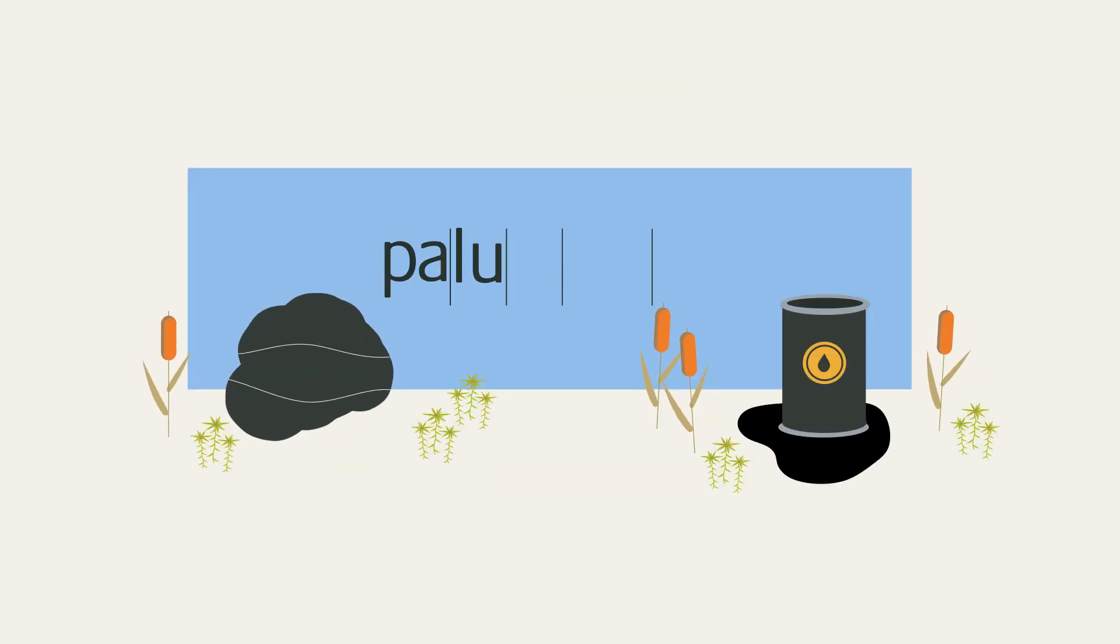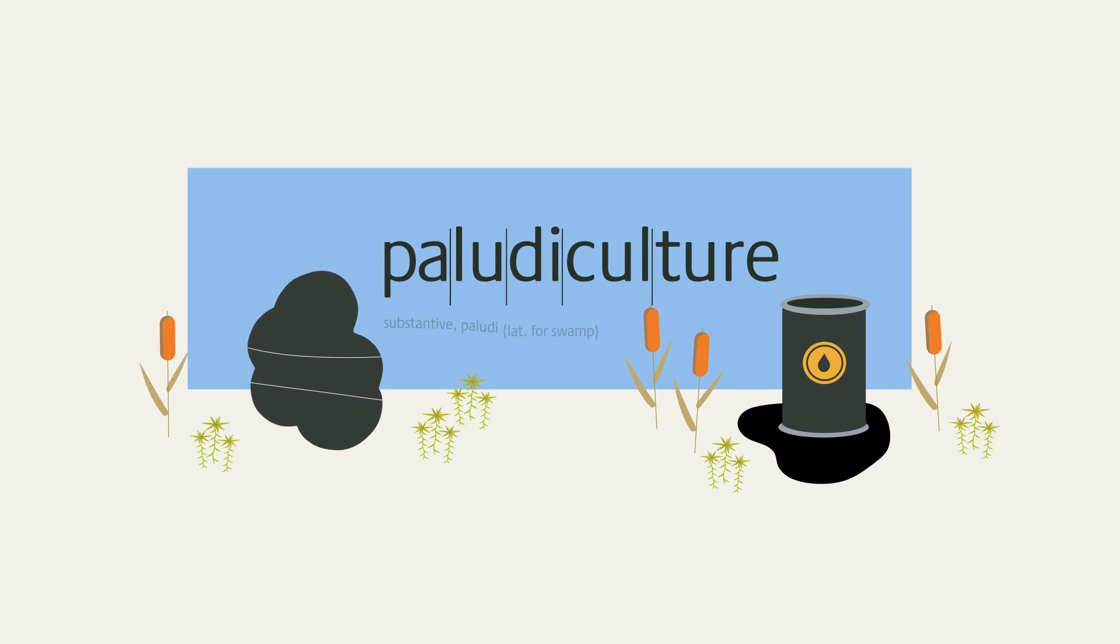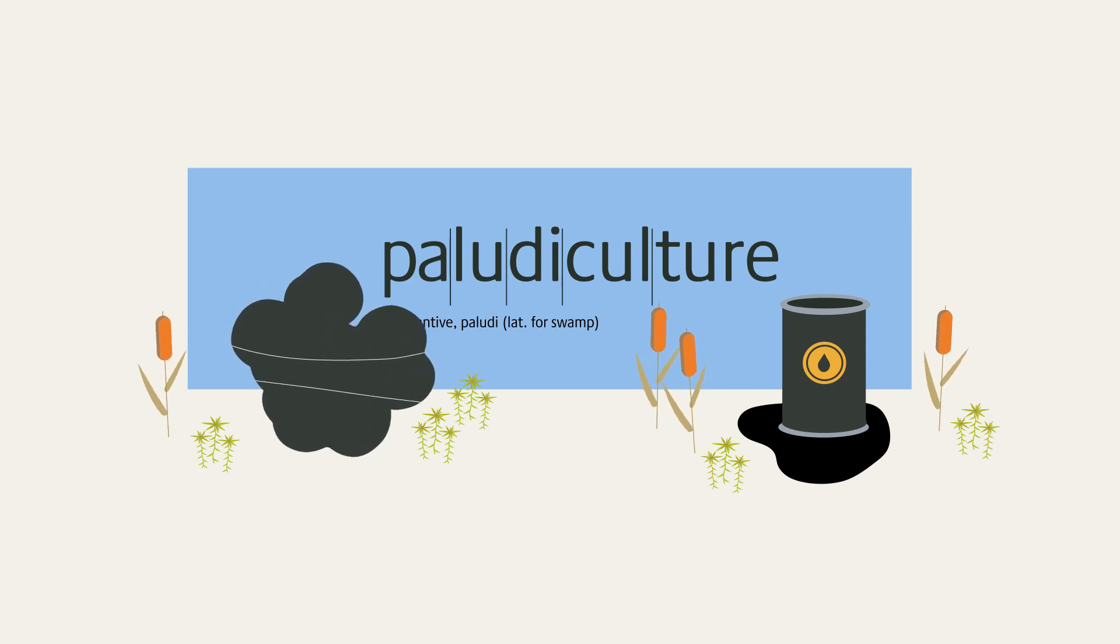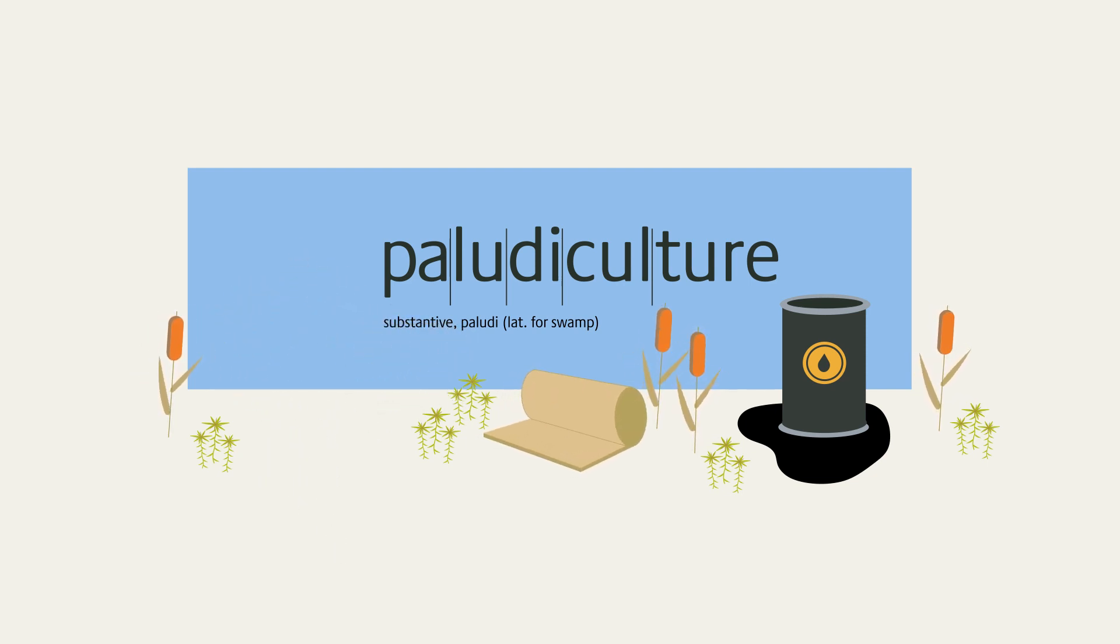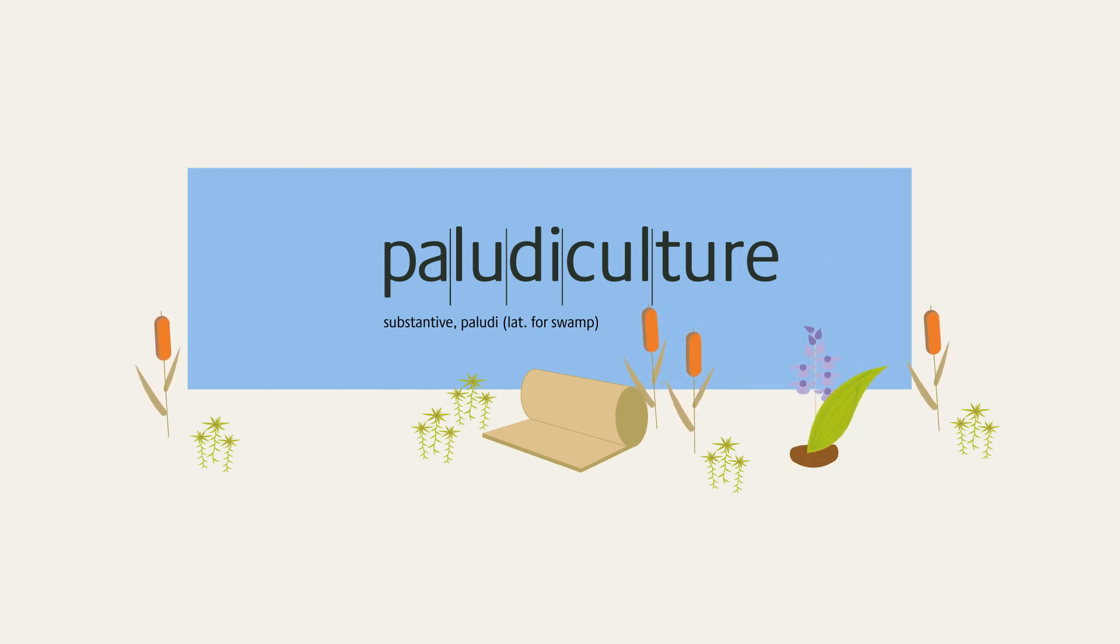Three reasons why we should include paludiculture in our vocabulary and our climate protection. The re-wetting of peatlands reduces greenhouse gases. Long-lasting products sequester carbon. They can also replace fossil raw materials and energy-intensive products.